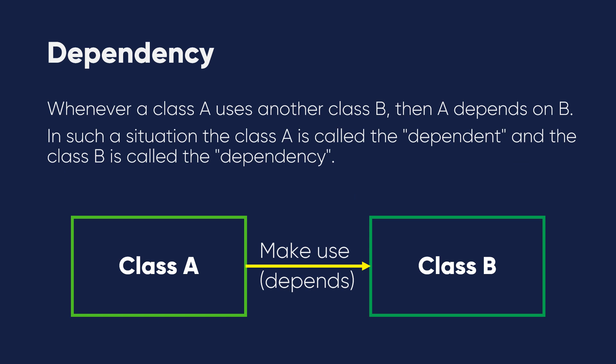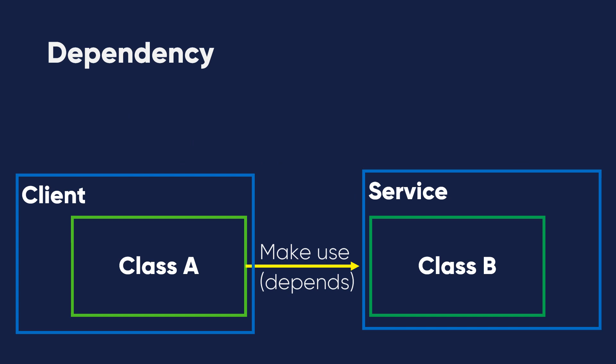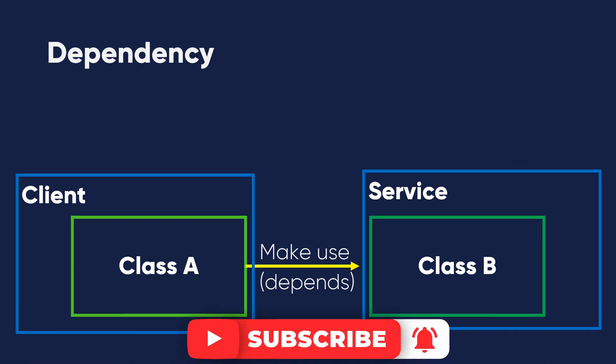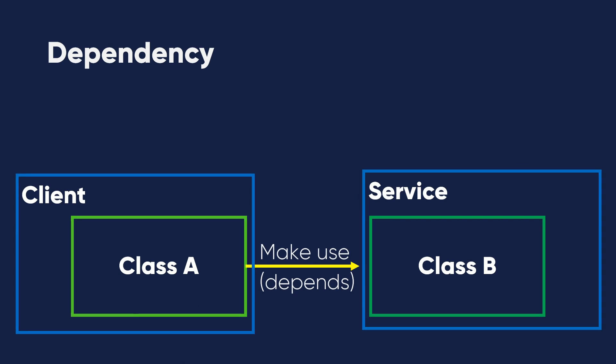Many people asked me about dependency injection, and I decided to make everything clarified and illustrated in infographics and images. The most commonly used naming in dependency injections is that class A is a client and class B is a service. So a client makes use of and depends on the service, meaning the service is the dependency of the client.